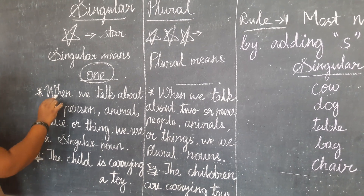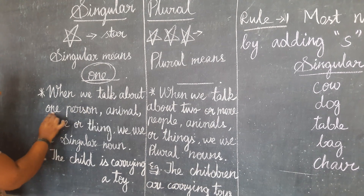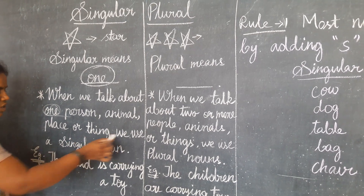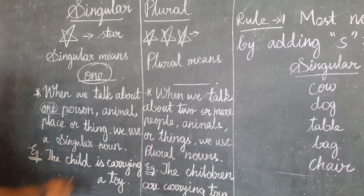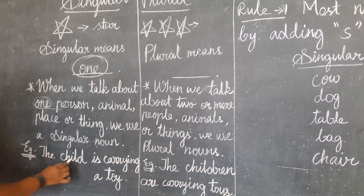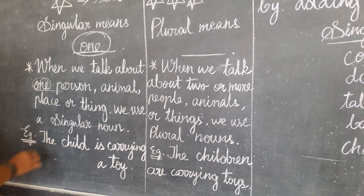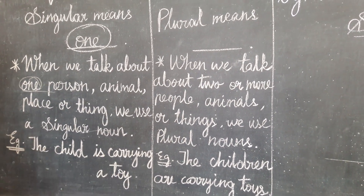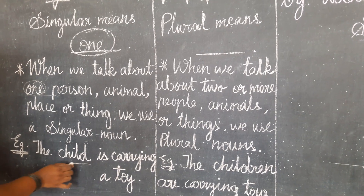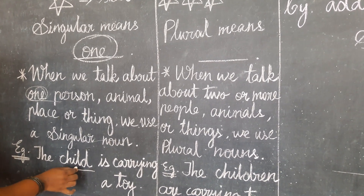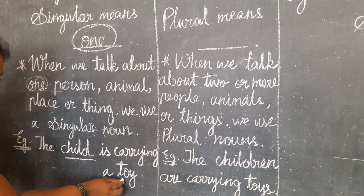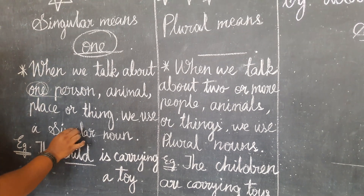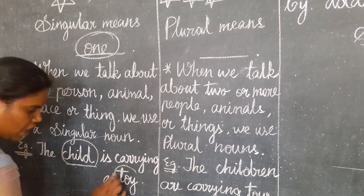Once again I will repeat. When we talk about one person, animal, place or thing, we use a singular noun. Now let's see the example. The child is carrying a toy. Child comes under the name of person, and toy comes under the name of thing. So here the singular nouns are child and toy.